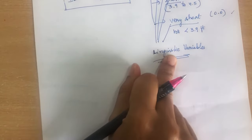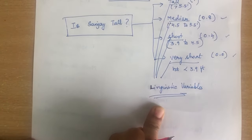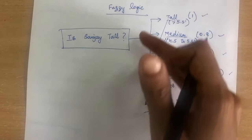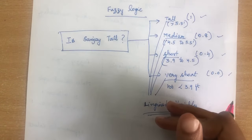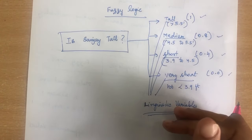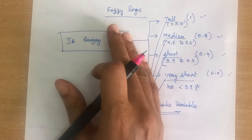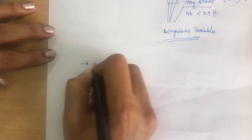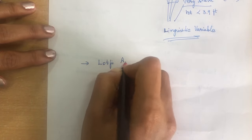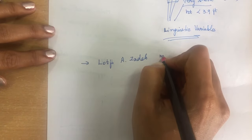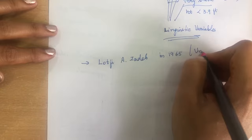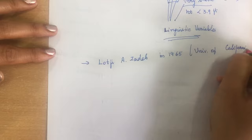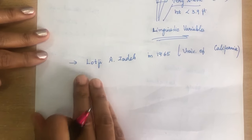These variables are called linguistic variables in fuzzy logic. How you solve the problem is by classifying the variables into different categories and assigning values — this manner of solving is called fuzzy logic. Fuzzy logic was invented by Lotfi H. Zadeh in 1965 at the University of California.